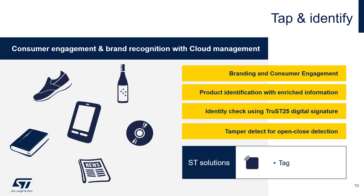Another useful example of having NFC embedded into your product is tap-and-identify. For example, a bottle of wine could have an NFC tag that takes you to a review of the wine or perhaps to a web store to order another case. Also, an NFC-enabled tag with a digital signature could detect if a product is counterfeit or has been tampered with.